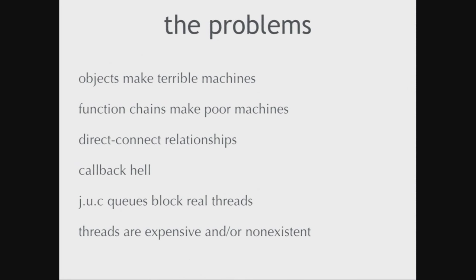The solution to all four of these first problems could be queues. If we use queues to separate our machines, they're little conveyor belts between our machines, then the machines don't have to know about each other anymore. There's great indirection. The machines only have to know that some kind of package comes off a queue, and I do something with it, and I put it on another queue. So we're not chaining together objects or chaining together functions anymore, and we're not directly connected.